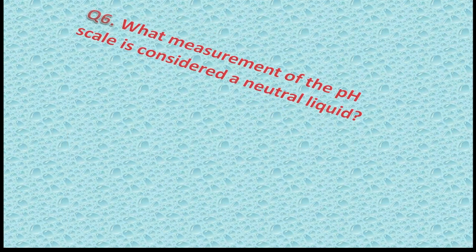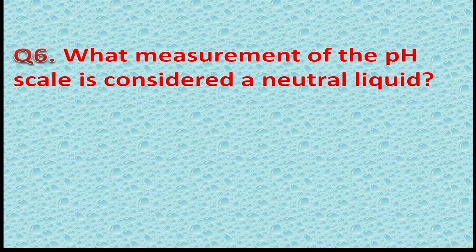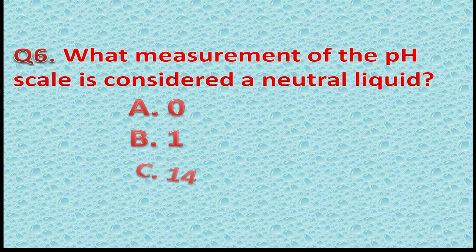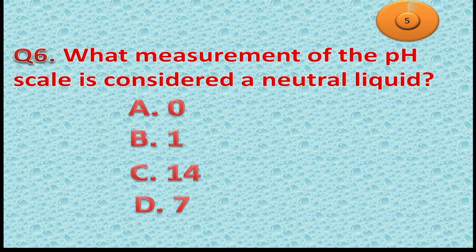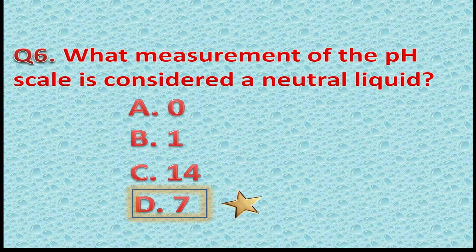Question 6: What measurement on the pH scale is considered a neutral liquid? Option A: 0. Option B: 1. Option C: 14. Option D: 7. The correct answer is Option D — 7. You got one more star if you gave this answer.